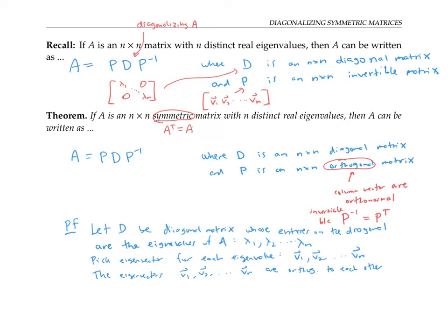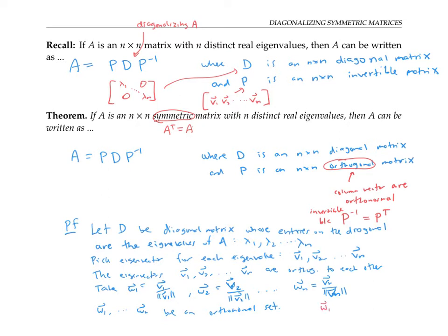They might not be orthonormal though — they might not have length one. So let's take w one to be v one divided by its length, w two to be v two divided by its length, and so on. Then w one through w n will still be orthogonal but will also have length one, so they form an orthonormal set. To see why they're still orthogonal, consider w one dotted with w two: that's v one rescaled dotted with v two rescaled. Pulling out the scalars gives a real number times v one dot v two. Since these were already orthogonal, their dot product is zero, so w one dot w two is also zero.